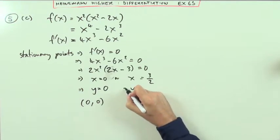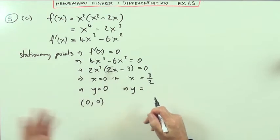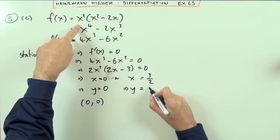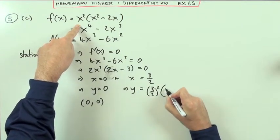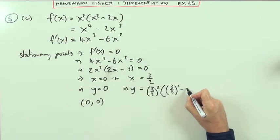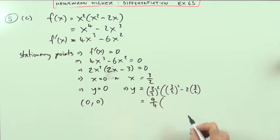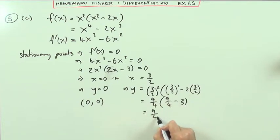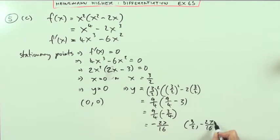If x is 3 upon 2, that means that y equals, but again, there was no mention of y there, but they're talking about points, would be 3 upon 2 squared times the 3 upon 2 squared minus 2 times the 3 upon 2, just substituting it in. So that's 9 upon 4 times, and then you've got 9 upon 4 minus 3. So 3 is going to be 12, so that's minus 3 upon 4. So that's negative 27 upon 16. So this point's going to be 3 upon 2, negative 27 upon 16.